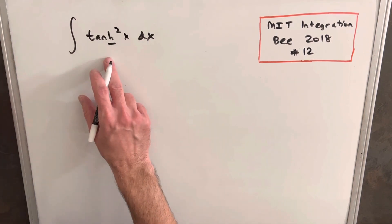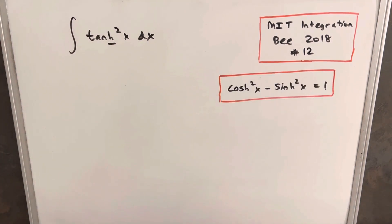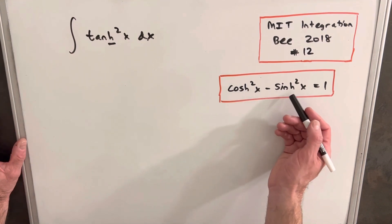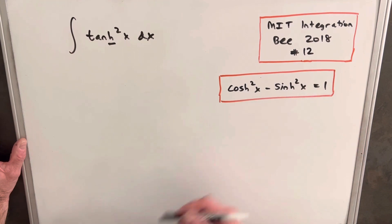Let's go over quickly the identity we can use to transform this. So similar to the identity sine squared plus cosine squared equals 1, for the hyperbolic trig functions we have cosh squared minus sinh squared equals 1.